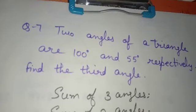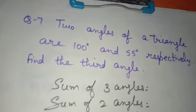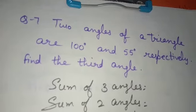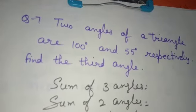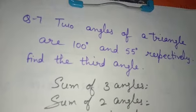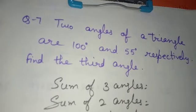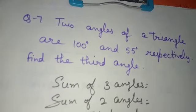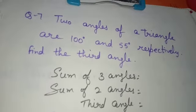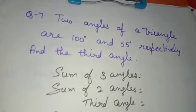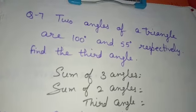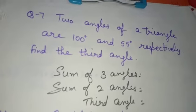The sum of the two given angles is 100 plus 55, which equals 155 degrees. So the third angle is 180 minus 155. You know how to subtract, so this part you will do on your own.